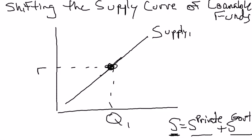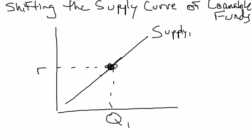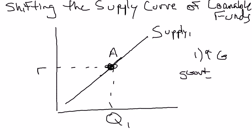In our first example, let's say there's an increase in government spending. That means, holding everything else constant, what's going to be the effect on national savings? I've drawn my initial supply curve with a real interest rate as a reference point and Q1 here — let's call this point A. If there's a war and we buy a bunch of tanks and military equipment, government spending surges.